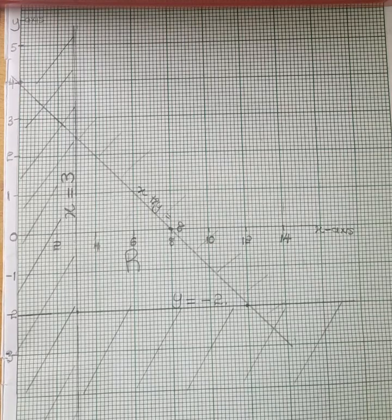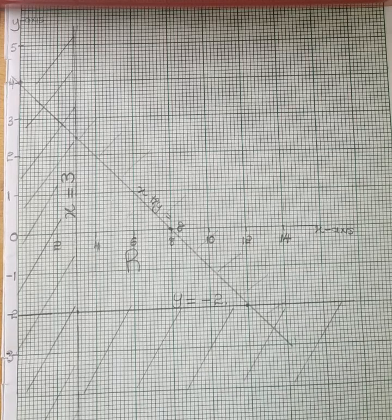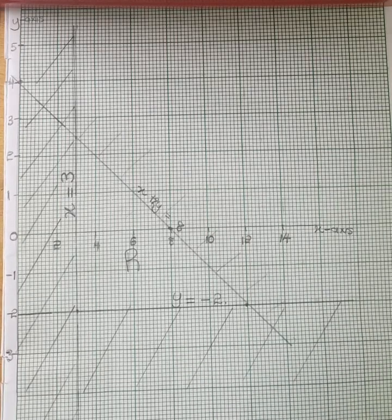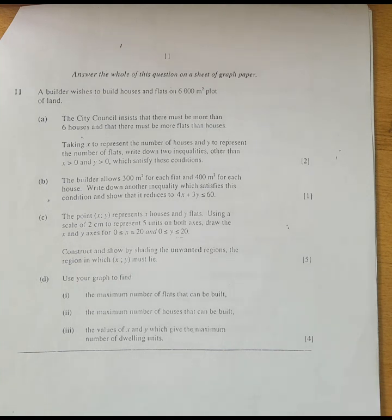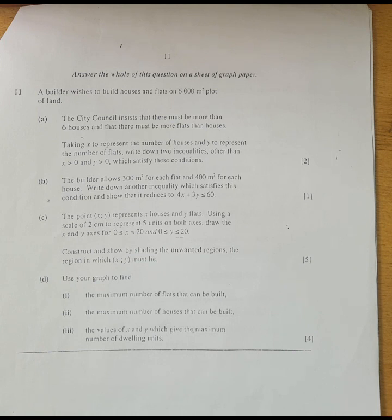Now we move on to the final option — word problems on inequalities. In Maths Paper 2, they are mainly interested in word problems on inequalities. Be able to interpret correctly, write down the inequalities, follow all the steps provided in option B, and be able to find the maximum and minimum using the graph. We are going to look at the question from November 2010.